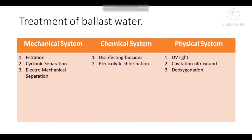There are mechanical, chemical, and physical treatment systems. In the mechanical system there is filtration, cyclonic separation, and electromechanical separation. In the chemical system there are disinfectants and biocides, and electrolytic chlorination. For physical separation there is UV light, cavitation, ultrasound, and deoxygenation. Thank you friends, I hope you liked this video. Keep watching and please subscribe and like this channel.